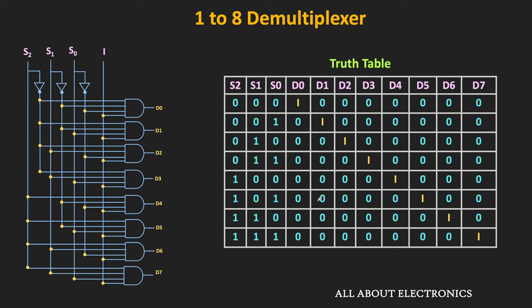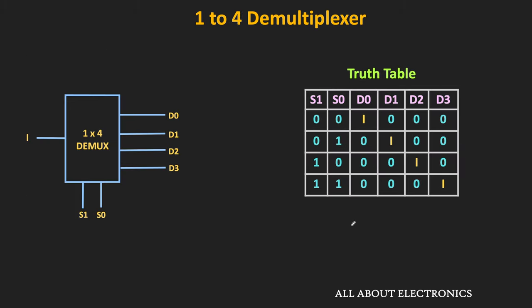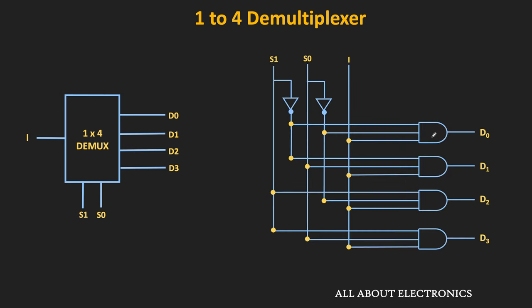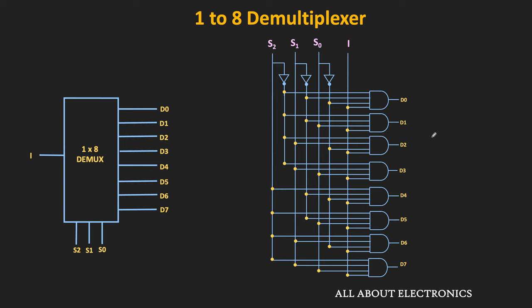This is the logic circuit and truth table of the 1×8 demultiplexer. Similarly, this is the truth table of the 1×4 demultiplexer — depending on the selection line combination, the input appears at only one output while the remaining outputs are 0. The 1×4 demultiplexer requires 4 AND gates with 3 inputs each, while the 1×8 demultiplexer requires 8 AND gates with 4 inputs each.